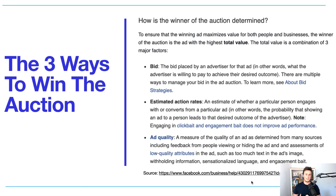Number one is the bid — how much you as an advertiser are willing to pay for that impression. Number two is the estimated action rate — basically the engagement rate, how relevant your ad is to the audience you're targeting. Number three is the ad quality — the actual creative itself, the way you display it and word things, whether it's high quality or baity and spammy — and this affects the total value of your ad and therefore the results you get.